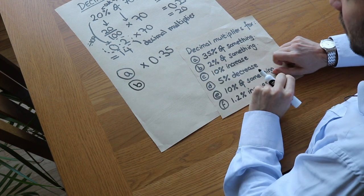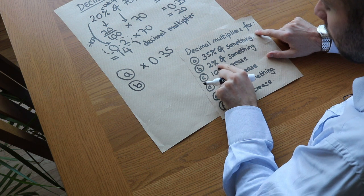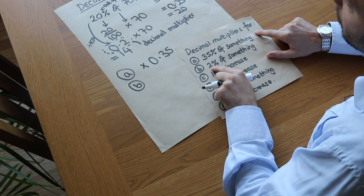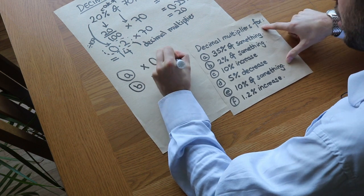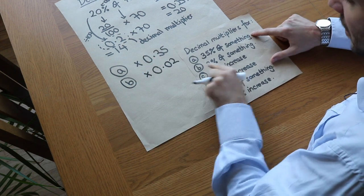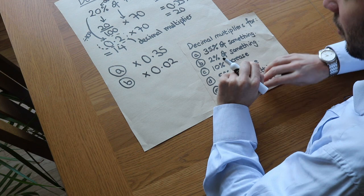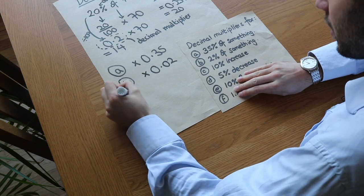What about the second one? If we want to find 2% of something, well 2% means 2 over 100, and two hundredths we could write as 0.02. So we can find 2% of something by just multiplying by 0.02, that decimal multiplier.